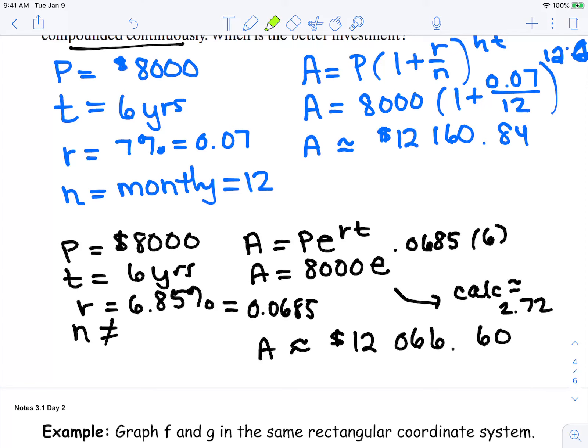So comparing the two, the top choice would make us more money if we chose these parameters.